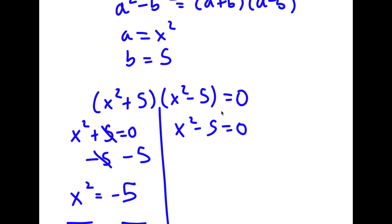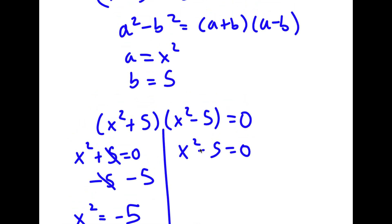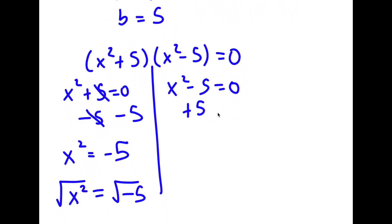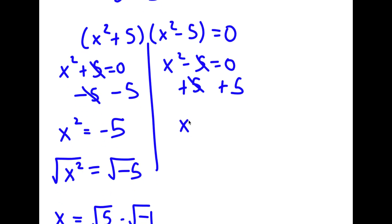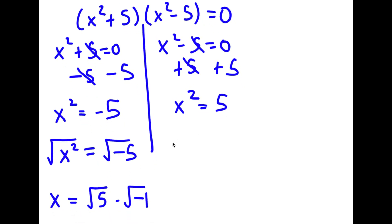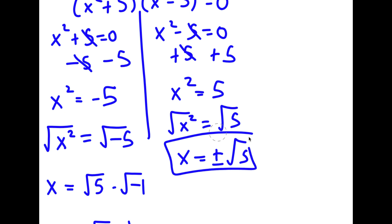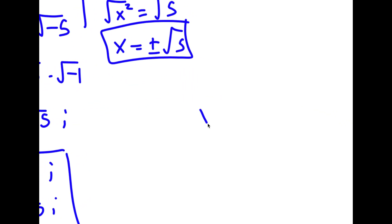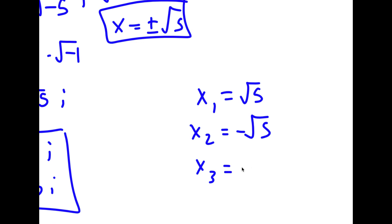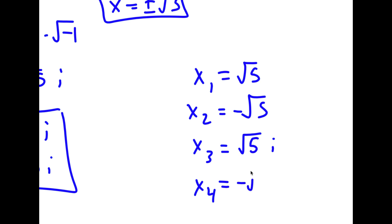For the other equation, x squared minus 5 equals 0, I add 5 on both sides, so x squared is equal to positive 5. Taking the square root on both sides gives x equal to positive or negative square root of 5. So my four solutions to this problem are: x equals the square root of 5, x equals negative square root of 5, x equals square root of 5 times i, and x equals negative square root of 5 times i.